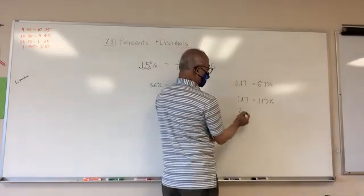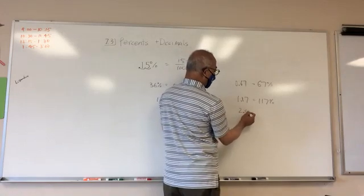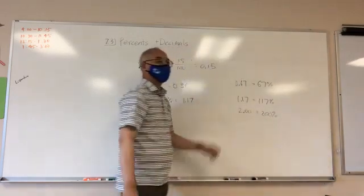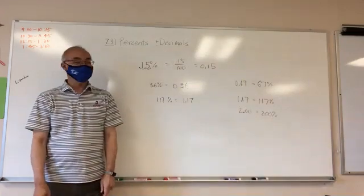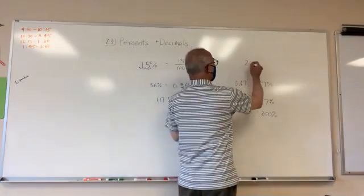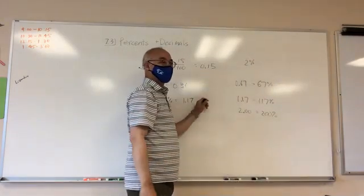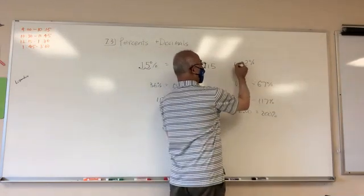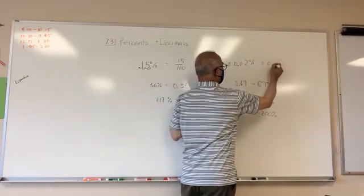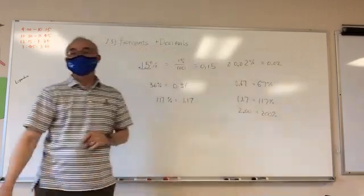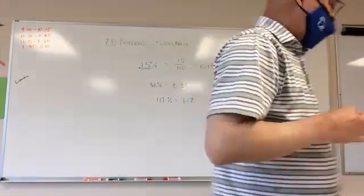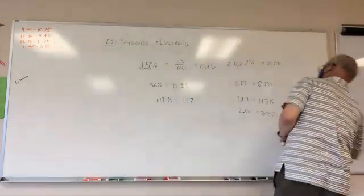If I had 2, this is the decimal point here, so I can move it over here to the right, so it's the same as 200 percent. If I had 2 percent, I want to change this into a decimal. I'm going to move this over one, two. It's the same as 0.02.